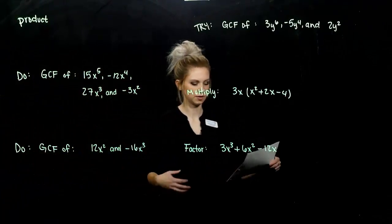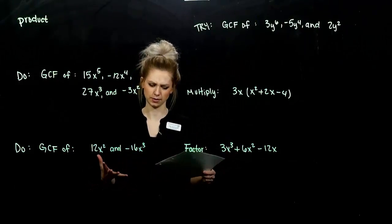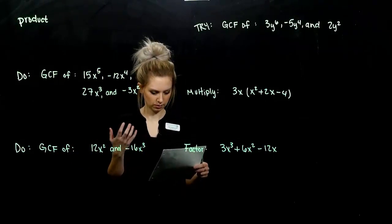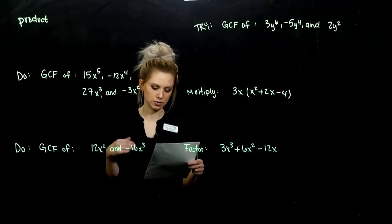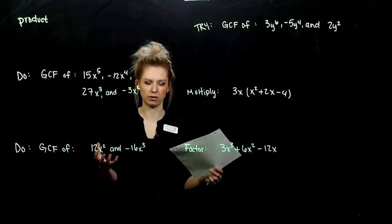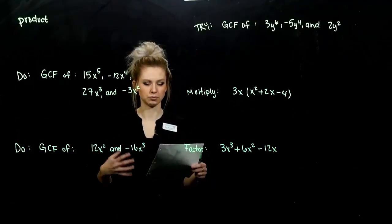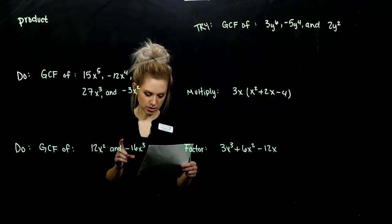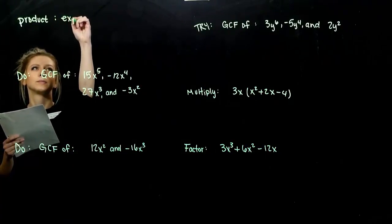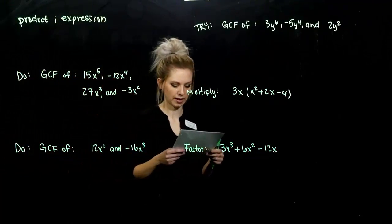We want to take some terms being added or subtracted together and turn it into multiplication, which feels kind of funny, but we can do it. A factor of a polynomial P is a polynomial that can be used to express P as a product. We use it as both a verb and a noun. A factor is a chunk of the polynomial, and to factor it is to write it as that product. A factorization of a polynomial is an expression that names the polynomial as a product.